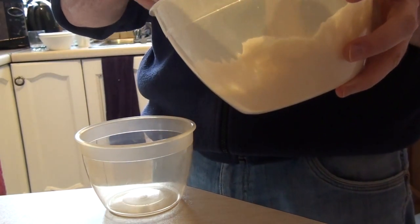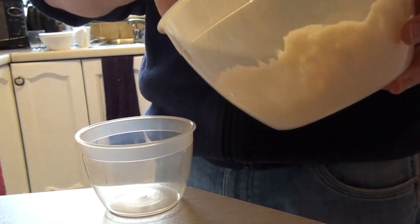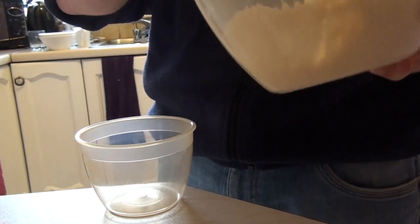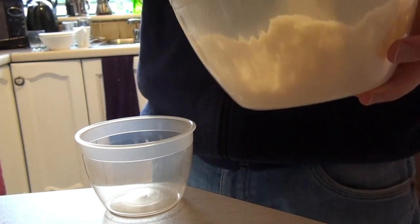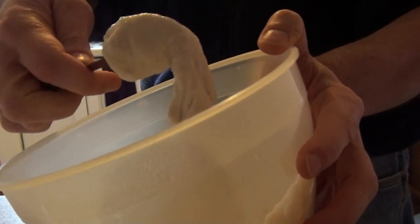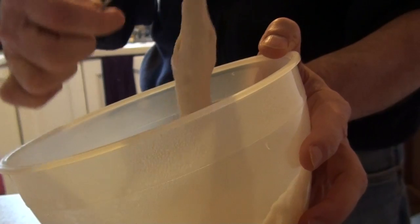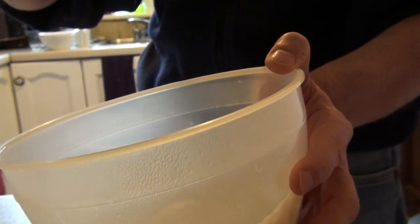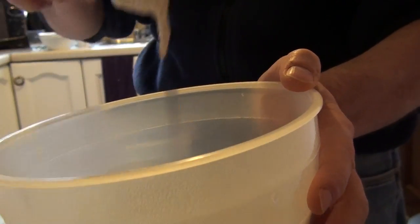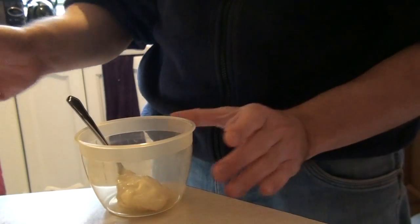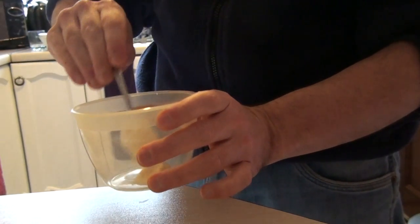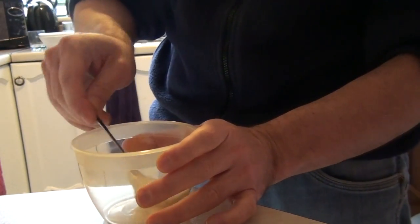So you just take a spoon, a teaspoon, a nice little dollop of it. There you go, a good dollop of it. Stick it into your box, into your container.